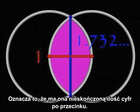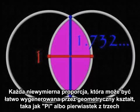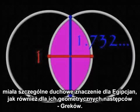This means that it has an infinite number of integers after its decimal point. Any irrational proportion that can be easily generated by a geometric shape, such as pi or the square root of 3, was considered to be of special spiritual importance to the Egyptians, as well as their geometric heirs, the Greeks.